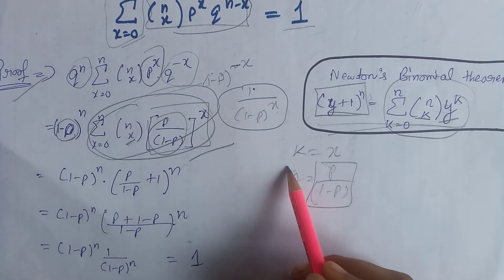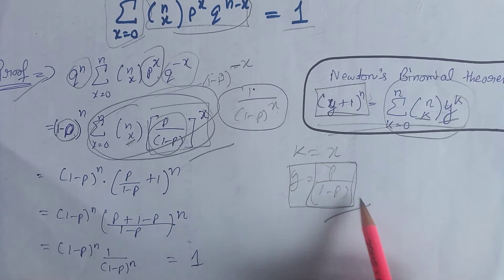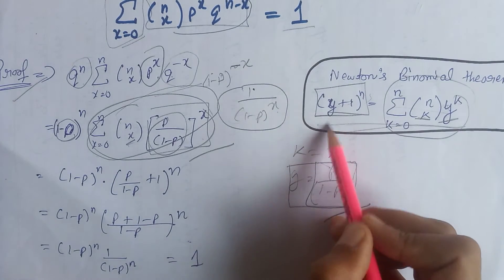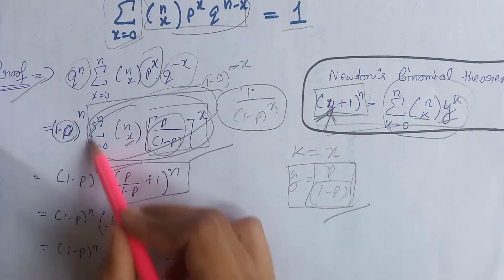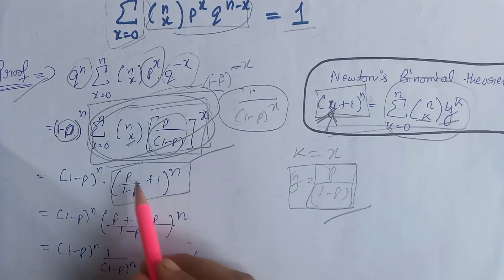That means on putting value of y equal to p divided by 1 minus p in this equation, we get this as the answer of this whole equation.